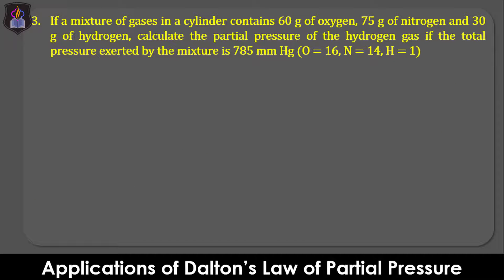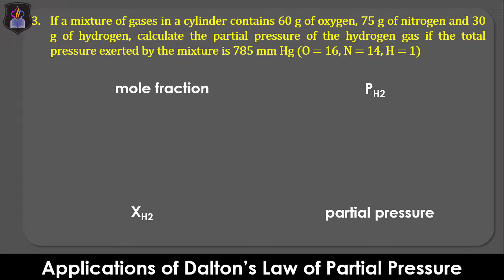Question 3: If a mixture of gases in a container contains 60 g of oxygen, 75 g of nitrogen, and 30 g of hydrogen, calculate the partial pressure of the hydrogen gas if the total pressure exerted by the mixture is 785 mmHg. Take the relative atomic masses of oxygen, nitrogen, and hydrogen to be 16, 14, and 1 respectively. We will apply the relationship between mole fraction and partial pressure: first determine moles of each gas, then calculate the mole fraction of hydrogen, then determine its partial pressure.